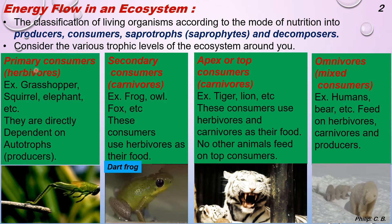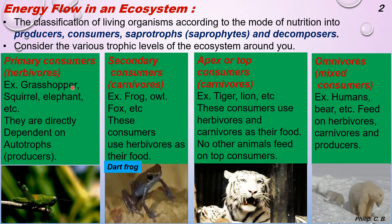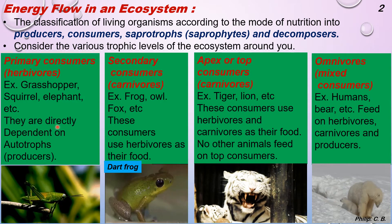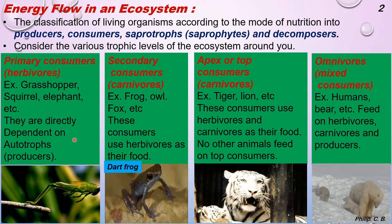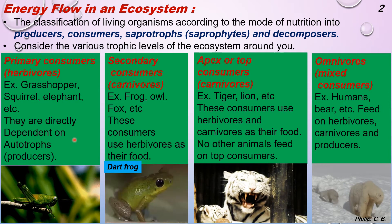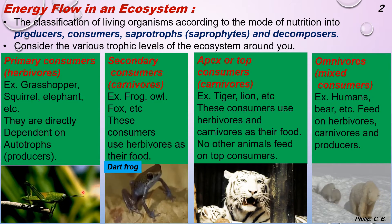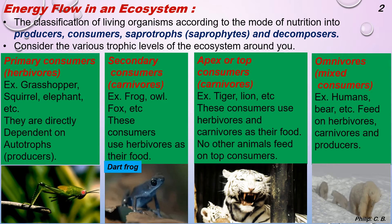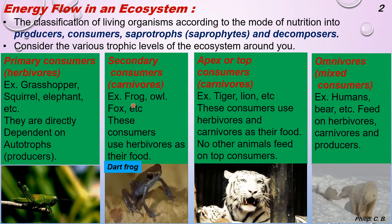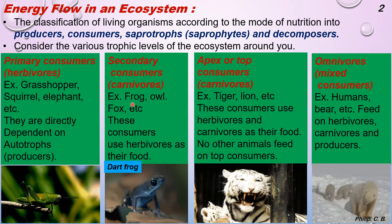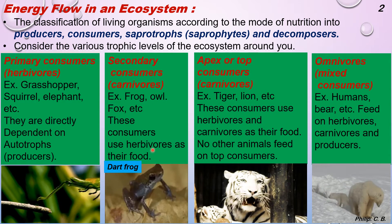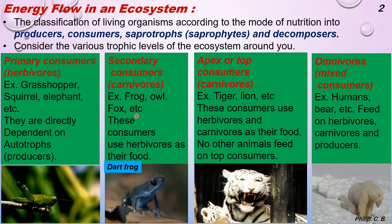Consider the various trophic levels of the ecosystem. Primary consumers are herbivores — grasshopper, squirrel, elephant, etc. — which are directly dependent on autotrophs, that is producers, the ones which produce their own food. Secondary consumers are carnivores — for example frog, owl, fox, etc. — which use herbivores as their food.